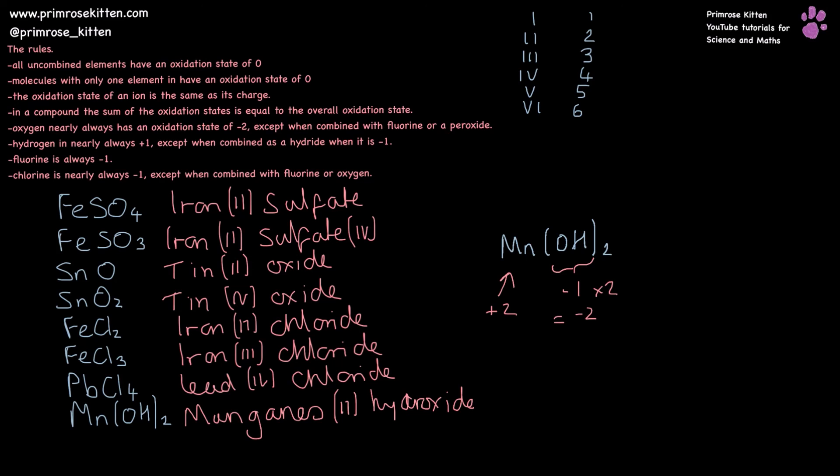Now oxidation states are really important when we are naming ions because transition metals have a variable oxidation state. I've shown you a few examples here. These are generally the most common ones, but they are completely variable in their oxidation states.